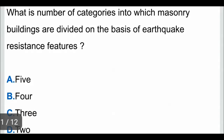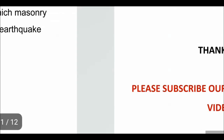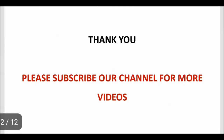Question 10: what is the number of categories into which masonry buildings are divided on the basis of earthquake resistant features? According to earthquake resistance features, masonry buildings are divided into five categories. So the correct answer is option A: five. Thank you, thanks for watching this video. If you liked this video, please comment your valuable feedback in the comment section and please subscribe to our channel for more videos. Thank you.